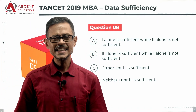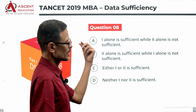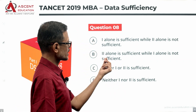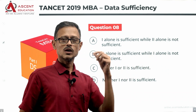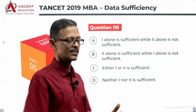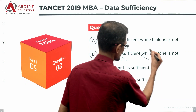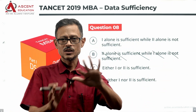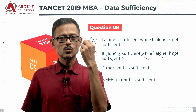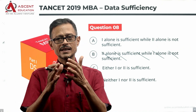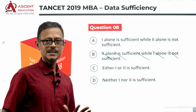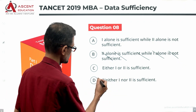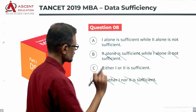Eliminating answer options: A says statement one is sufficient — keep it. B says one is not sufficient — eliminate B. C says either one or two is sufficient — keep it. D says neither one nor two is sufficient — eliminate D. We are now left with A or C. We need to evaluate statement two.